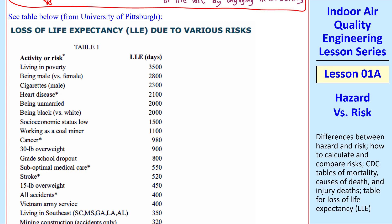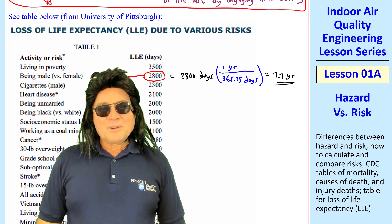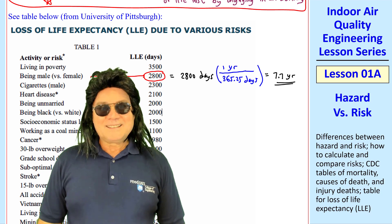Some of these are rather interesting. Just being male rather than female means you lose about 2,800 days. Converting using 365.25 days per year to account for leap years, that's about 7.7 years. That's a significant loss just from being male.